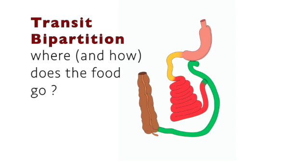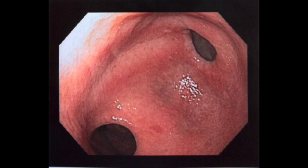Very frequently, surgeons ask: how is the transit after a bipartition? Initially, our idea was just to drain the sleeve into the ileum to obtain its strong metabolic response. But how does it really occur?